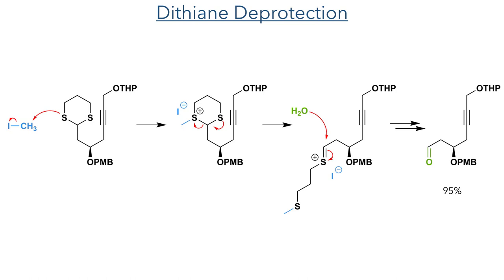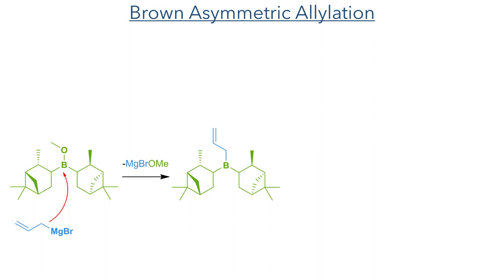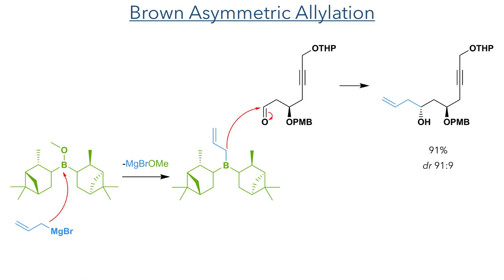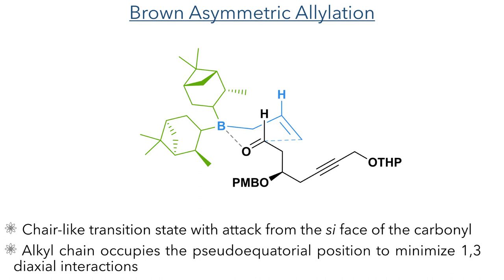This aldehyde served as a substrate for a Brown asymmetric allylation. Allyl Grignard was reacted with diisopinocampheylborane to produce a nucleophilic borane complex. This selectively added to one face of the aldehyde, producing the target in 91% yield with 91% dr. This selectivity is driven by a chair-like transition state that forms from the association of the boron atom with the carbonyl oxygen, adding the nucleophile to the re-face as the more sterically demanding alkyl chain occupies the pseudo-equatorial position to minimise 1,3-diaxial interactions.